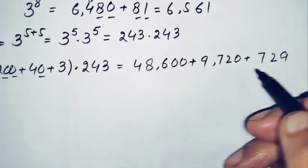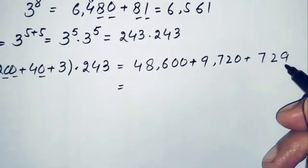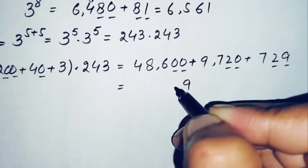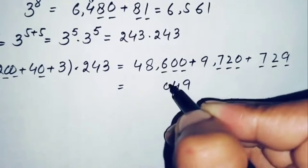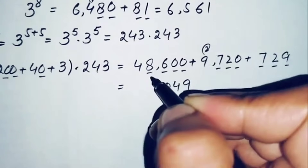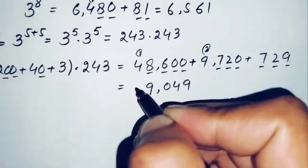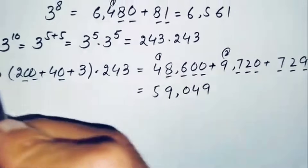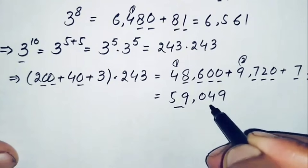Adding the three partial products to get 3^10: 48600 + 9720 + 729. Working through the addition: 9+0+0=9, 2+2+0=4, 0+7+7=14 (write 0 carry 2 — wait, 7+7+6=20, write 0 carry 2), continuing gives 59049. So the value of 3^10 is 59049.